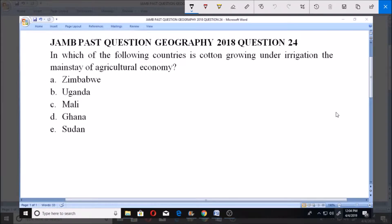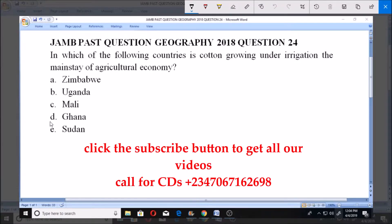Yes, let's look at this JAMB past question, Geography 2018 question number 24. In which of the following countries is cotton growing under irrigation the mainstay of agricultural economy? A) Zimbabwe, B) Uganda, C) Mali, D) Ghana, E) Sudan.